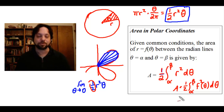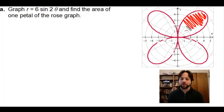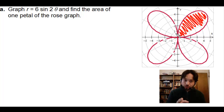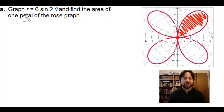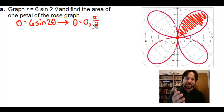Our first example involves finding the area of one petal of a rose. All four petals are the same, so we'll choose the petal in the first quadrant. To integrate, we need two places where the function hits the pole — where r equals zero. Setting r equal to zero, we get theta equals zero, because 6 sin(2·0) = 0. We also get pi over two as the next theta where r equals zero.